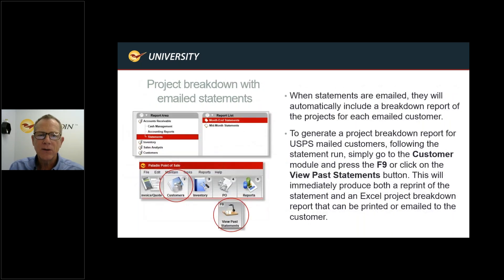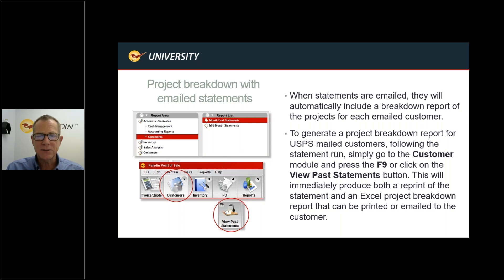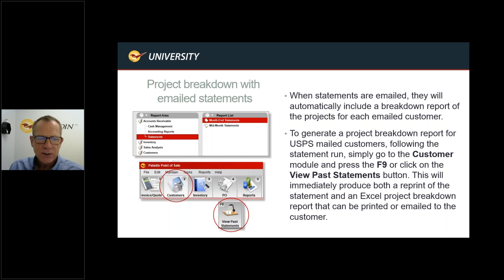You can get a project breakdown with email statements, either automatically or on demand. For email, tell the system you want a breakdown sent automatically with statements — it's done. For customers who don't get emails, go to the customer module and press F9 or click on the View Past Statements button. It will immediately reproduce a reprint of the statement and an Excel project breakdown report that you can print or email to the customer.